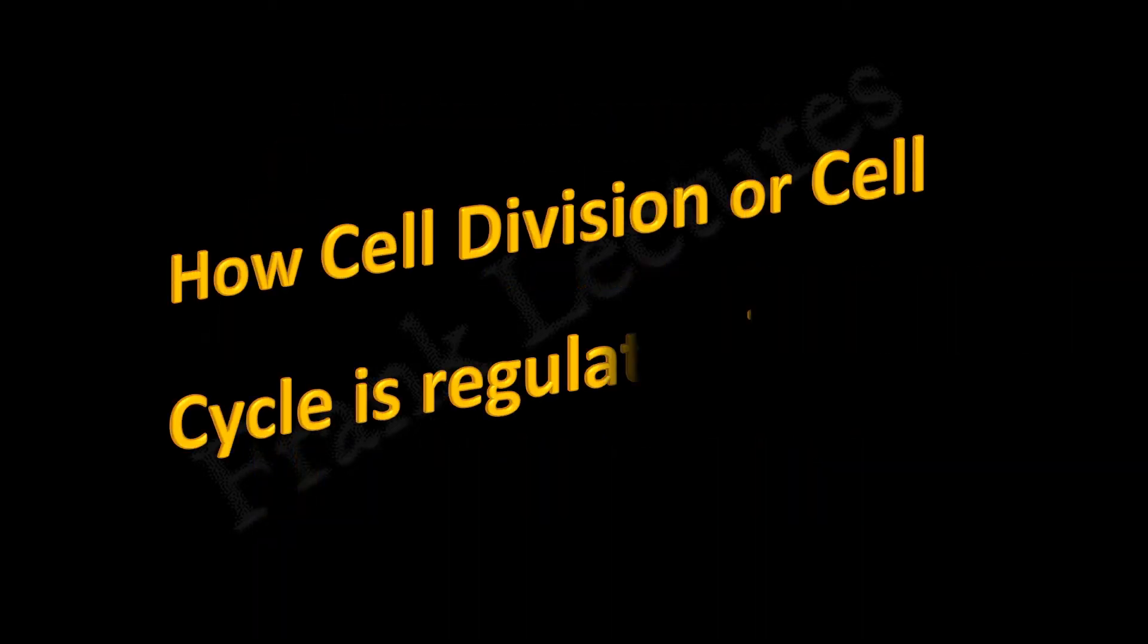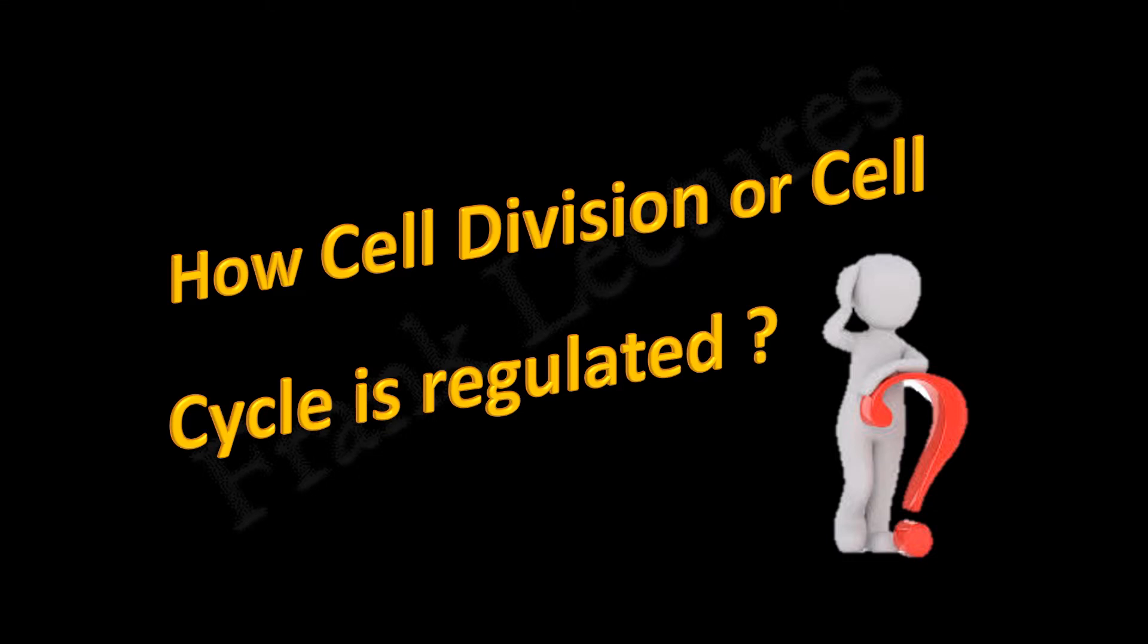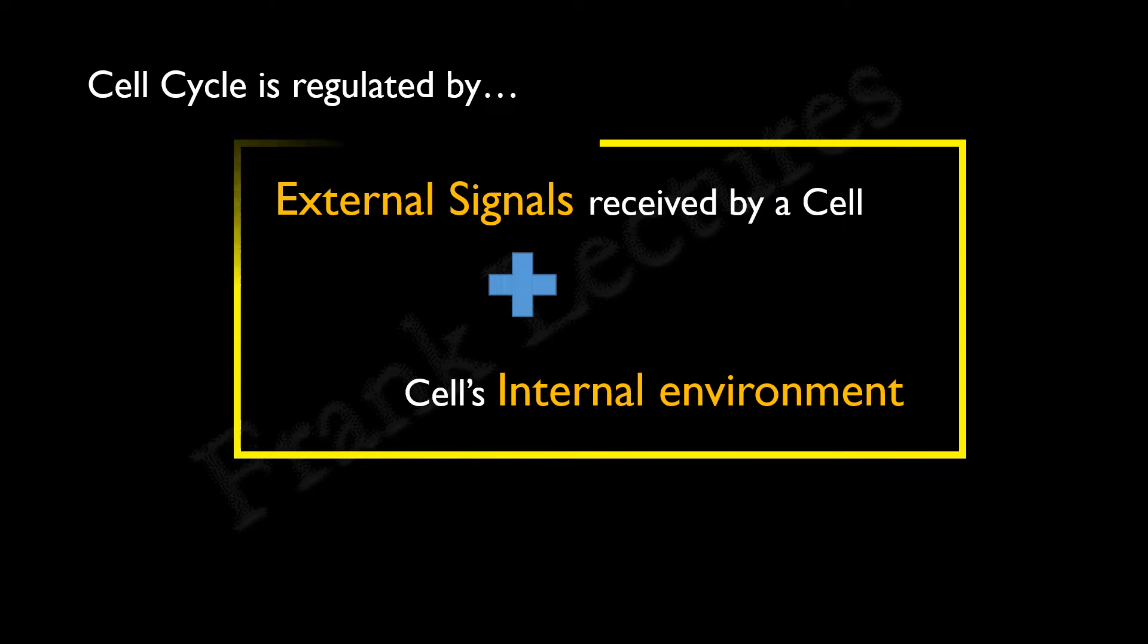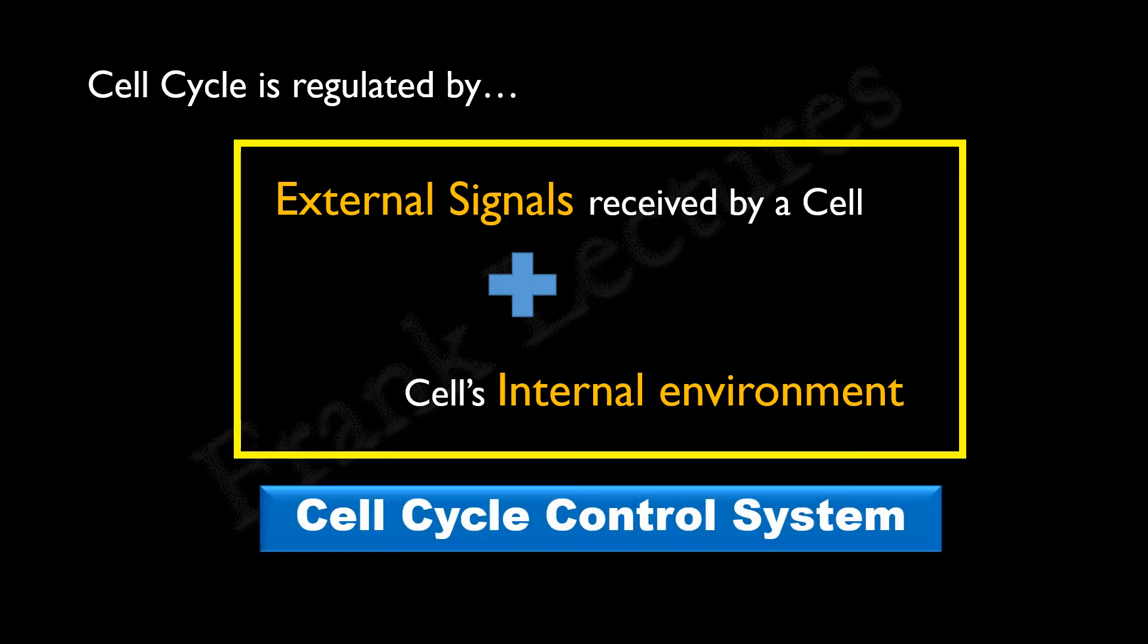So how is cell division or cell cycle regulated? The cell cycle is regulated by a combination of external signals received by cell and its internal environment. We will study this cell cycle control system in the next video lecture. Today we will look at the control points in the cell cycle where this control system works. What are these control points and why they are important is our main point of discussion.